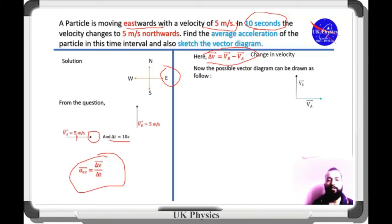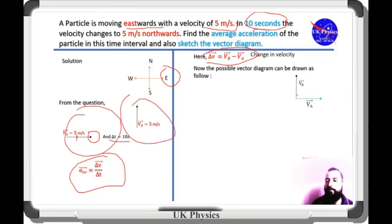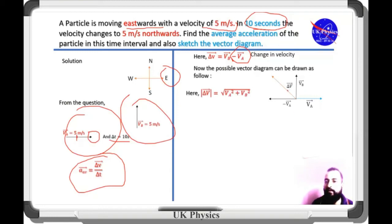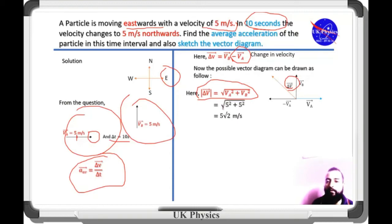Here we have coincided these two vectors — vector A and vector B — arranged with their tails coincided. This is the vector minus Va, because in the change in velocity we have a negative of Va. This is the resultant of these two vectors, which is the change in velocity. The magnitude of the change in velocity is given by the equation, and putting in all values, we get the magnitude of change in velocity as 5√2 meter per second.